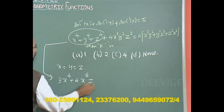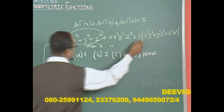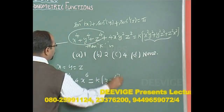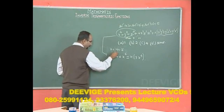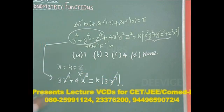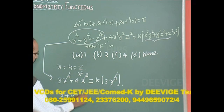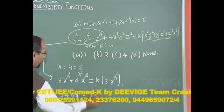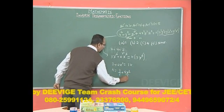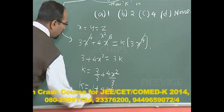Each term on the right-hand side gives x⁴, so we get k times 3x⁴. Cancelling x⁴ throughout, we are left with 3 + 4x² = 3k. Therefore k = 1 + 4x²/3.